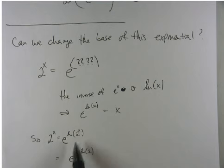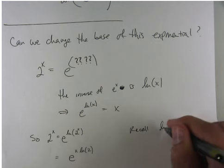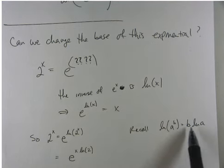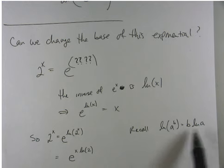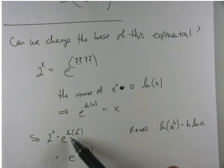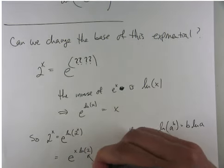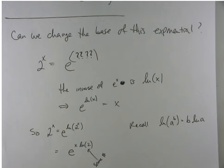Remember: the natural log of a to the b is b times natural log of a. Exponents inside of a natural log can be brought out as a coefficient, and vice versa — a coefficient in front of a natural log can be moved inside as an exponent. We are using that property here so that instead of thinking about the natural log of a complicated function, I'm thinking about x times the natural log of 2. And what's great is that the natural log of 2 is just some number — it's not changing.